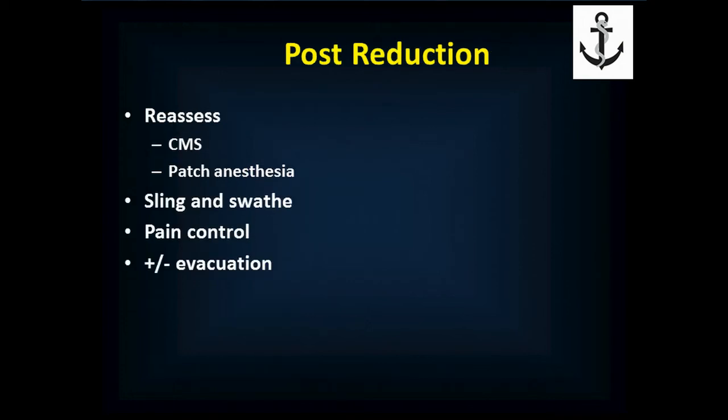After you've reduced the shoulder, reassess distal circulation, motor function, and sensory function, and check for patch anesthesia because you can pinch the axillary nerve during the reduction. Put them in a sling and swath. They'll probably need some pain control, maybe an oral narcotic for the first day or so. Depending on the level of pain, whether you suspect a fracture, and whether they're functional, you may need to evacuate them. Otherwise, when you reach the next port, they need an x-ray of the shoulder and follow-up.